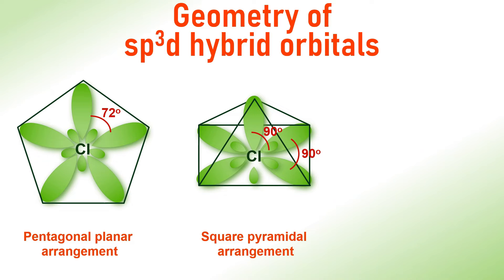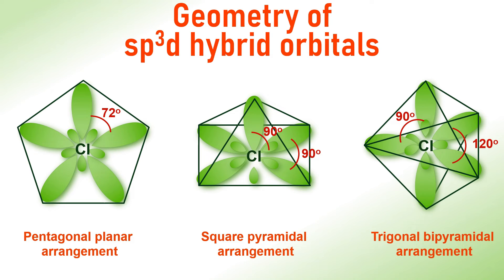The last one is trigonal bipyramidal arrangement. Now, we have to choose the most stable and symmetrical arrangement among them. Since the orbitals are going to be occupied by electrons, they must be oriented in space so as to minimize repulsions. That is, the angles between them should be as large as possible.